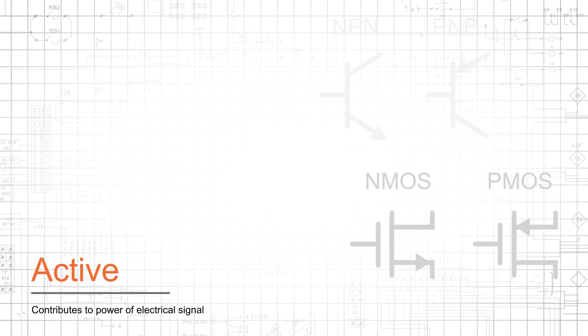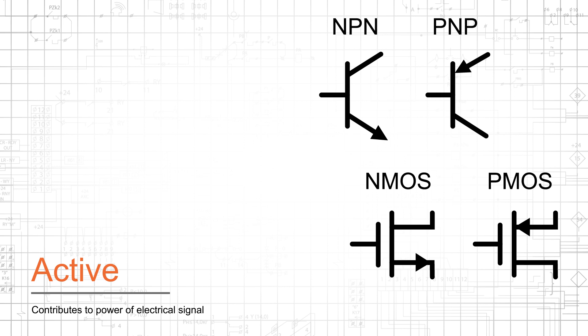An active component can contribute to the power of an electrical signal by injecting energy supplied by a source component. The most emblematic active components are called transistors.